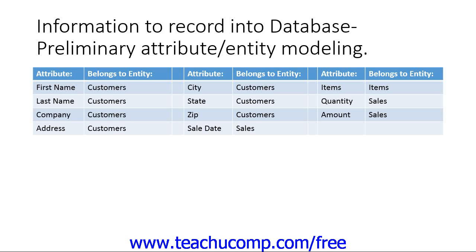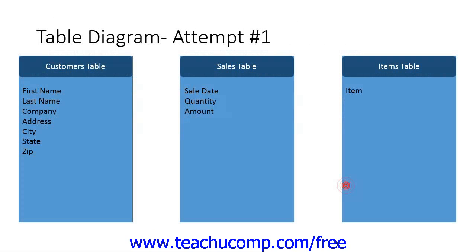Let's take a look at a preliminary model of the sales database from the prior example. First, make a listing of the various pieces of information that you want to record — these become the attributes of the various entities. Next, try to find what entities these attributes describe and list those too. Then make some sketches of the tables that show the fields of information within them. This can help you visualize what tables you will need to create, and will also allow you to see how the tables will eventually be related to each other in a larger relational database structure.